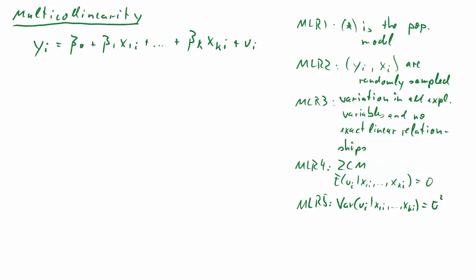In this clip, we're going to talk about the problem of multicollinearity. We'll do that in the context of a multiple linear regression model, which we have here, and our Gauss-Markov assumptions, assumptions 1 to 5, for the multiple linear regression model. We'll refer back to some of them.